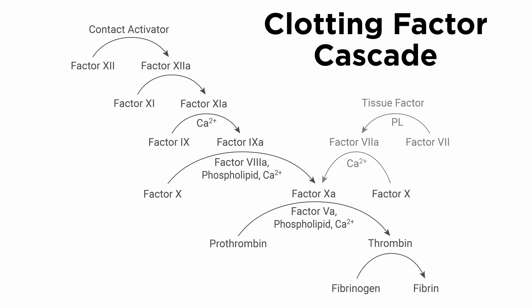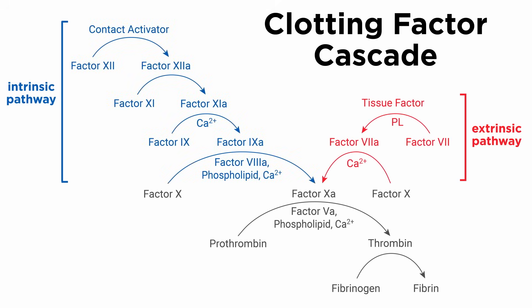The clotting cascade is divided into two different pathways — the extrinsic and intrinsic pathways — which both converge towards the common pathway. The ultimate goal of the clotting cascade is to convert soluble fibrinogen to insoluble fibrin. Another key protein in the clotting cascade is thrombin. Generation of thrombin is facilitated by factor Xa, catalyzing the hydrolysis of two proteolytic sites on prothrombin.